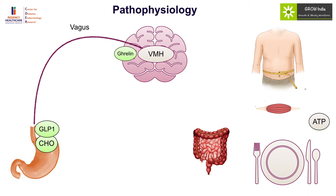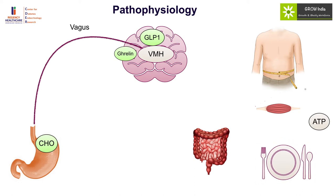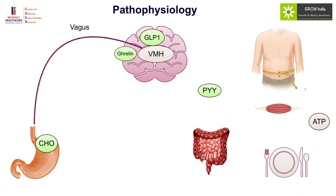If gastric emptying is delayed, the stomach will remain full and the body will feel satiated. GLP-1 also has a direct effect on the ventromedial hypothalamus to cause decreased appetite and induce satiety. The other gut-derived agent is PYY, which acts on the orexigenic pathway — predominantly on neuropeptide Y — to inhibit it and therefore reduce the orexigenic signal.